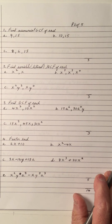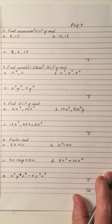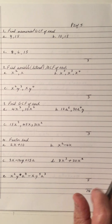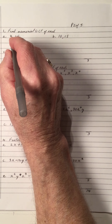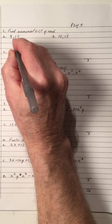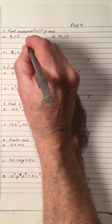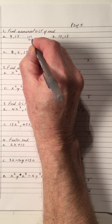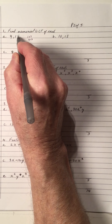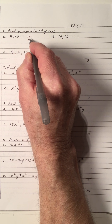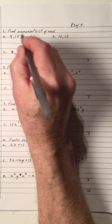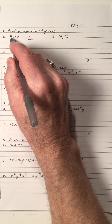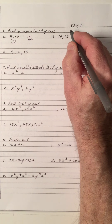Let's do the review of factoring in one. Find the numerical GCF of each. We take the smallest number, which is nine. The factors of nine are one times nine and three times three. Nine is not a factor of 15, so is three a factor? Yes. So three is the GCF of both — three is a factor of nine and a factor of 15.